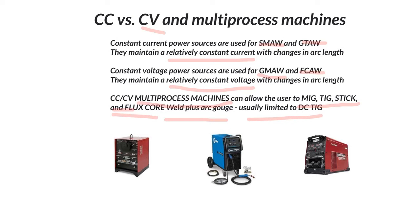So CCCV and multiprocess machines. I put in a couple examples here. Constant current, I use the Ideal Arc 250 Lincoln. We have the Miller Multimatic 252, and then the Flextech 500 as our multiprocess machine.